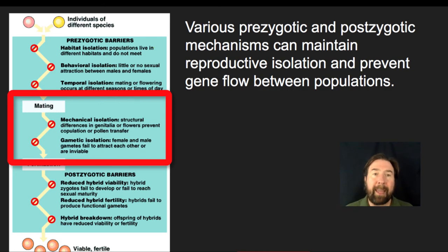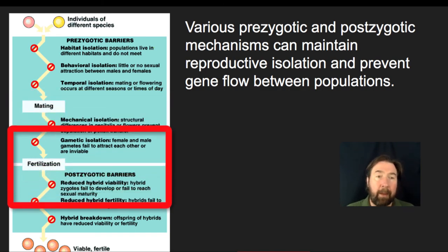We also could have a case where there's a gametic isolation where the male and female gametes fail to attract each other or are inviable. Meaning that they cannot physically come together because of some separation that has occurred. And again, chemical signals are involved. If a type of pollen lands but has the inability to produce a pollen tube on that particular type of flower, you're never going to get the male gamete and female gamete together.